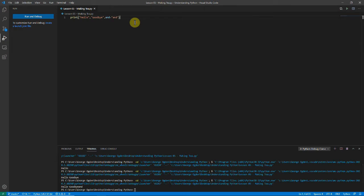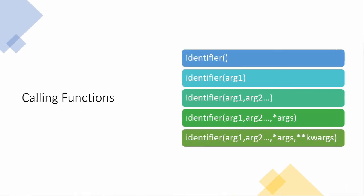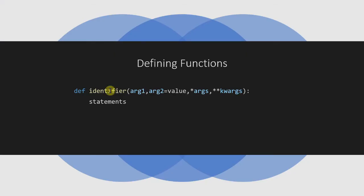You've been using functions already — along with print we've used input, which just has a single argument. What if you wanted to create your own function? You use the `def` keyword. The syntax is: `def`, then the function name (identifier), a series of arguments, then a colon at the end to say you're defining it — that colon is so easy to forget — and then a series of statements you want to run.